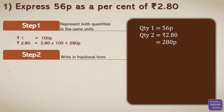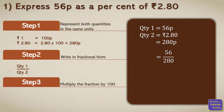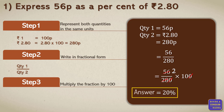Step two, we represent this in fractional form: first quantity divided by second quantity, that's 56 upon 280. Moving on to step three, we multiply this fraction with 100. The zeros cancel, and 28 times 2 is 56, so the result is 20. The percentage symbol is very important, so the final answer — 56 paise as a percent of 2 rupees and 80 paise — is equal to 20%.